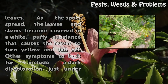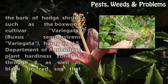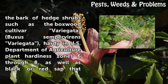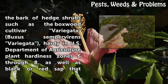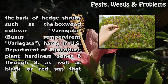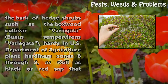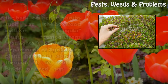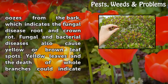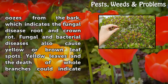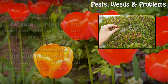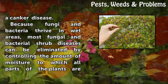Other symptoms to look for include a dark discoloration just under the bark of hedge shrubs such as the Boxwood cultivar Variegata, Buxus sempervirens Variegata, hardy in U.S. Department of Agriculture plant hardiness zones 6 through 8, as well as black or red sap that oozes from the bark, which indicates the fungal disease root and crown rot. Fungal and bacterial diseases also cause yellow or brown leaf spots. Yellow leaves and the death of whole branches could indicate a canker disease.